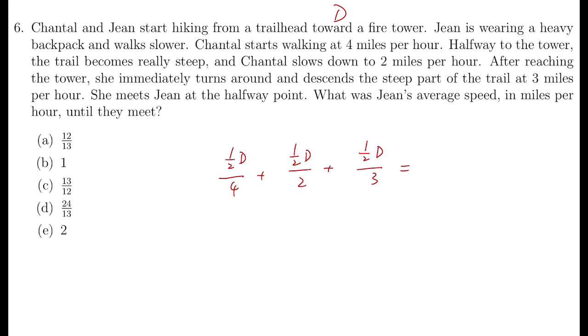And that's equal to the time taken for Sean to complete half of the trail, which is half D over V. Say V to be the average speed that we are supposed to find. Then we can cancel out all the half D's, and so 1 over V equals a half plus 1 third plus 1 quarter, and that's 13 over 12. So V is 12 over 13, answer is A.